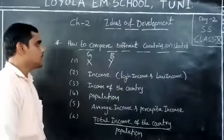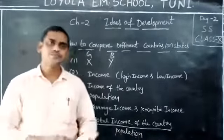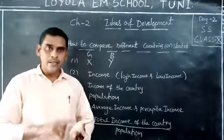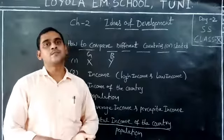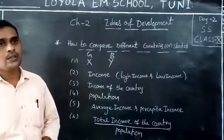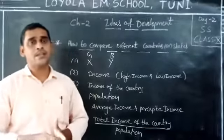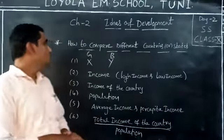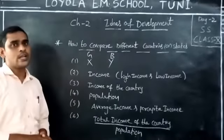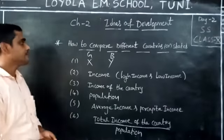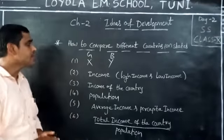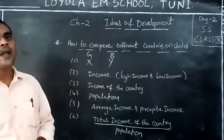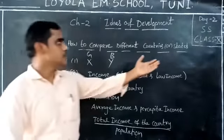To say that answer, both students' strengths are compared in some aspects. What are those aspects? For example, Education, Behavior, Discipline, and Attitude. These are some of the aspects. In all these aspects, we compare both students, and finally we say one is the good student and one is the bad student. It is the same for countries.